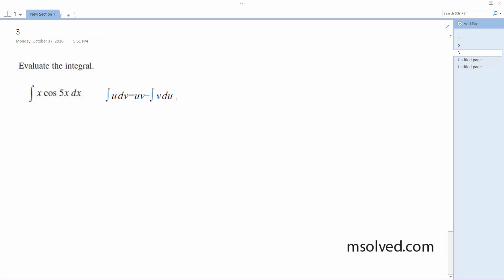so we're going to let u equal x, dv equal cosine of 5x dx.